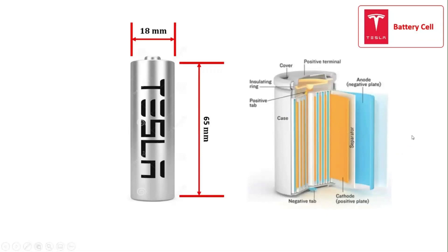The first two numbers tell us about the diameter of the cell in millimeters, the third and fourth numbers tell us about the height of the cell while the last digit tells us about the shape of the cell.